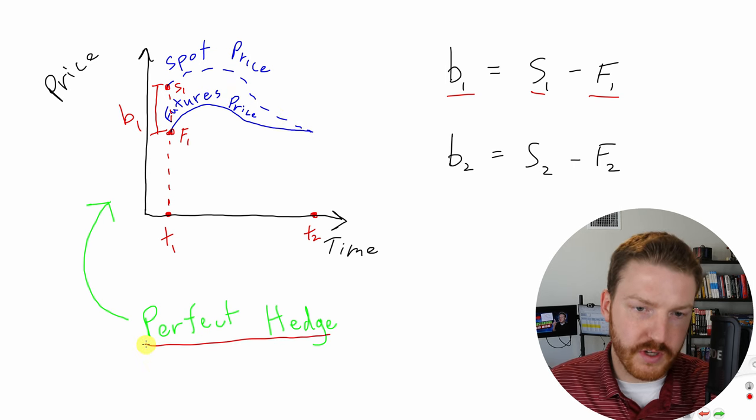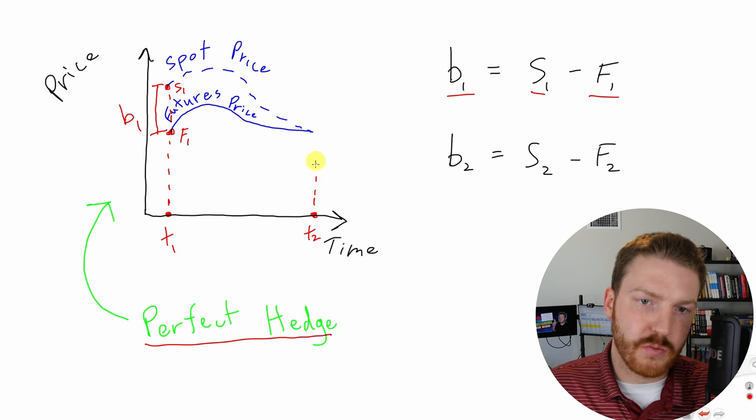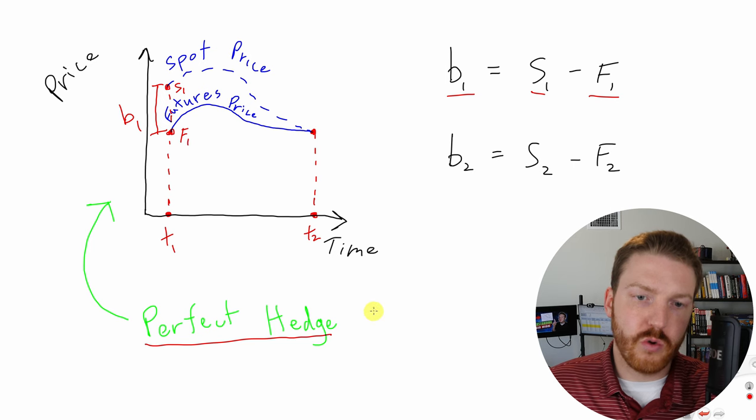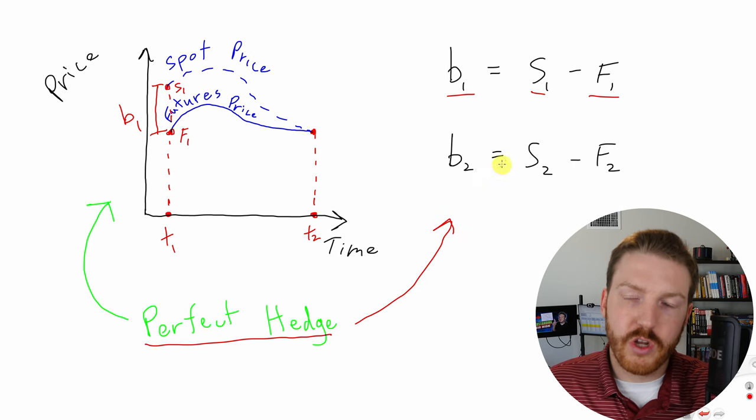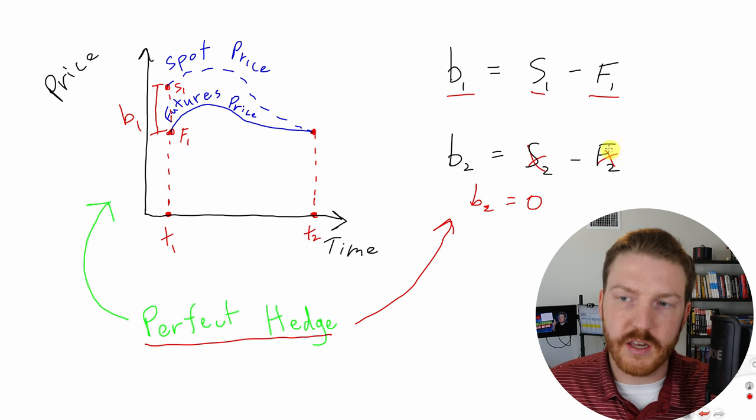And if there is a perfect hedge, these should always converge, right? So the spot price at time two, so this will be the maturity, should always come together and equal each other. So the basis at time two with this perfect hedge should be equal to zero because these two will exactly offset each other.